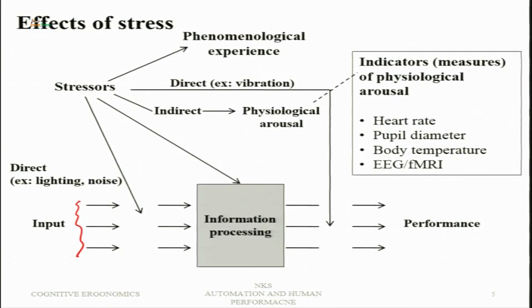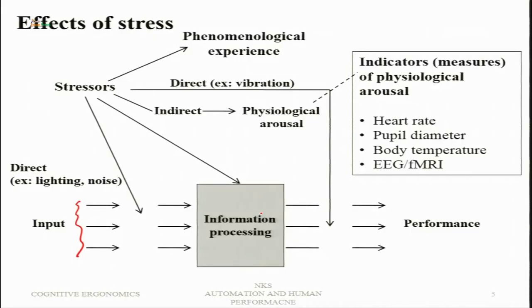The stressors influence information processing. There are also direct stressors in the form of vibration, which affect the output side — the performance side — directly. Stressors can directly influence information processing. There are some indirect influences in the form of physiological arousal. Different indicators of physiological arousal include heart rate, which goes up; pupil diameter, which dilates; body temperature, which goes up; and EEG and fMRI can also indicate the level of physiological arousal taking place.